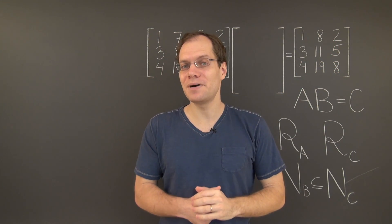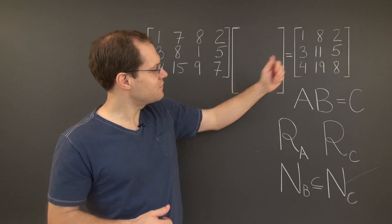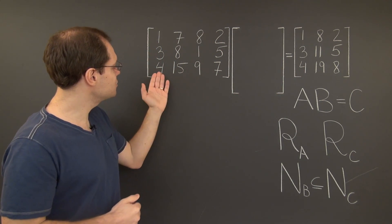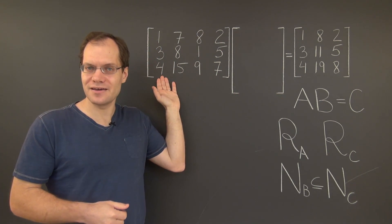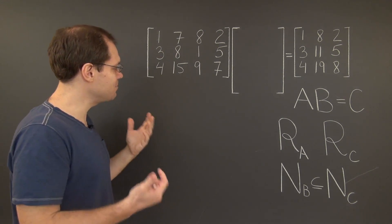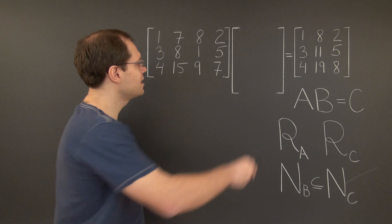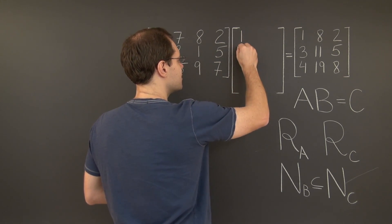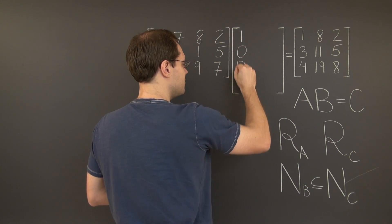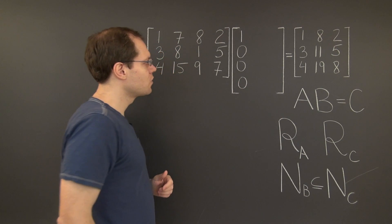So let's do them one by one. We notice that the first column of C is actually the same as the first column of A. That means that the linear combination we're looking for is 1, 0, 0, 0, and that's the four numbers that make up the first column of the matrix B.